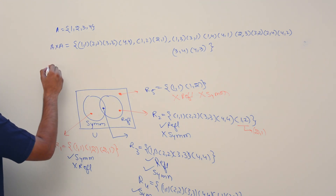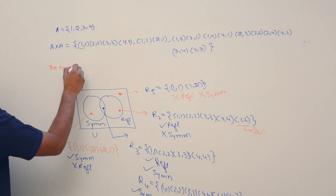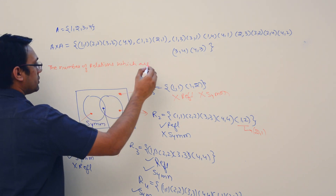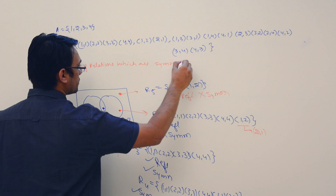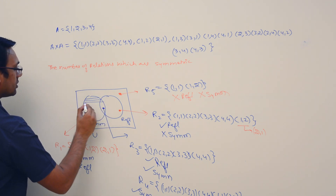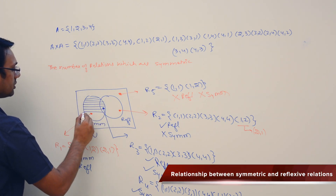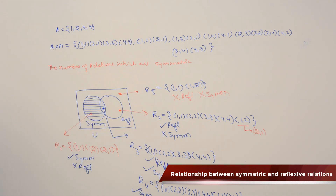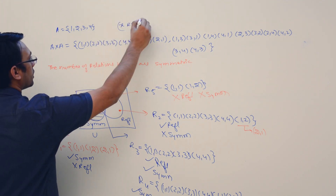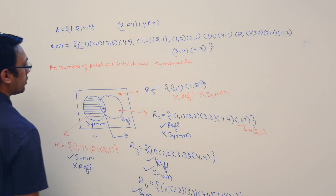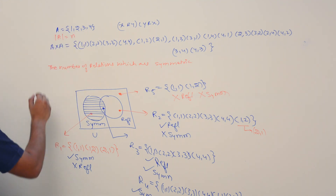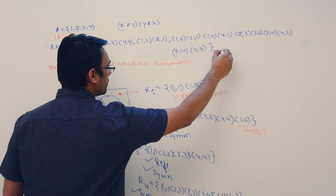Now let us look at the number of relations which are symmetric. I am trying to answer this question: what are the number of relations which are symmetric? If a relation has to be symmetric, then if x R y is in the relation, then y R x should also be there. If set A has cardinality n, then the cardinality of A × A will be n².